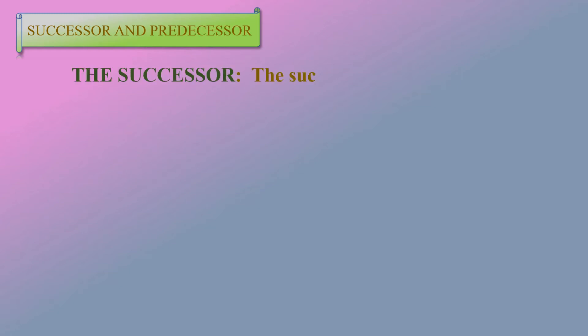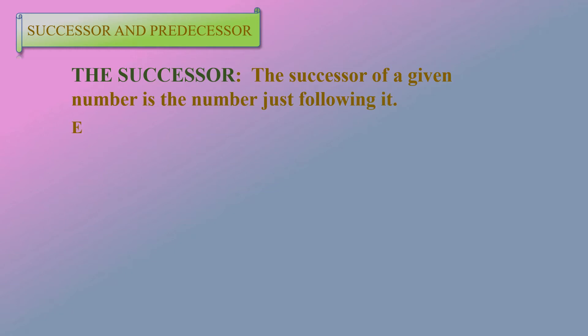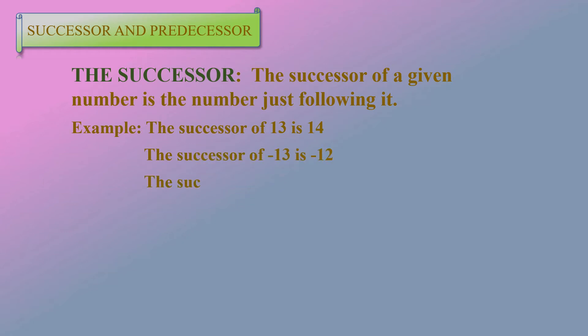Now we are going to learn about successor and predecessor. First, we learn about the successor. The successor of a given number is the number just following it. For example, the successor of 13 is 14, the successor of –13 is –12, and the successor of 0 is 1.